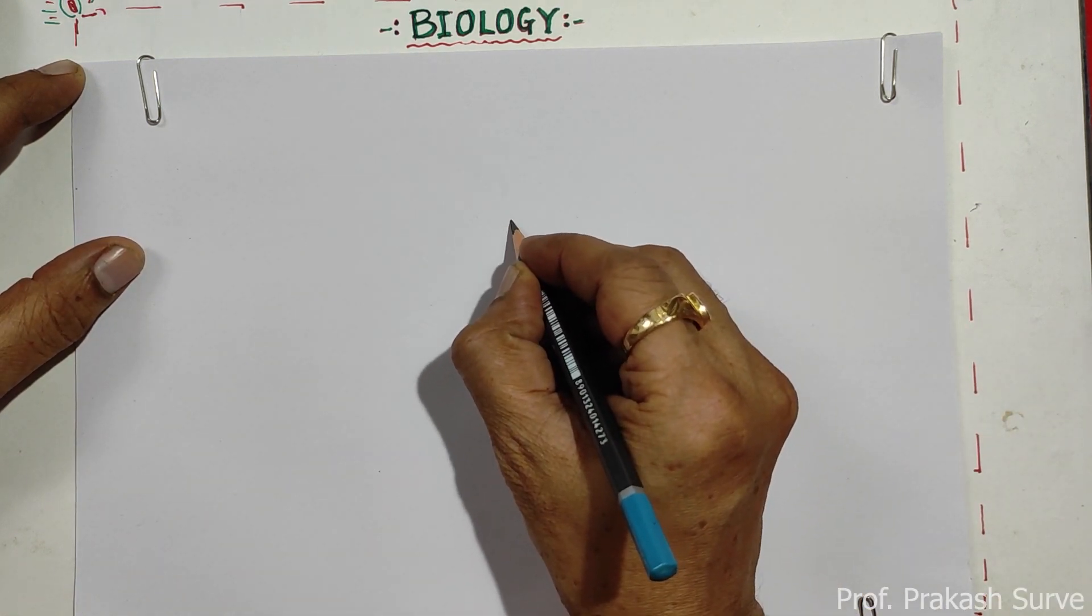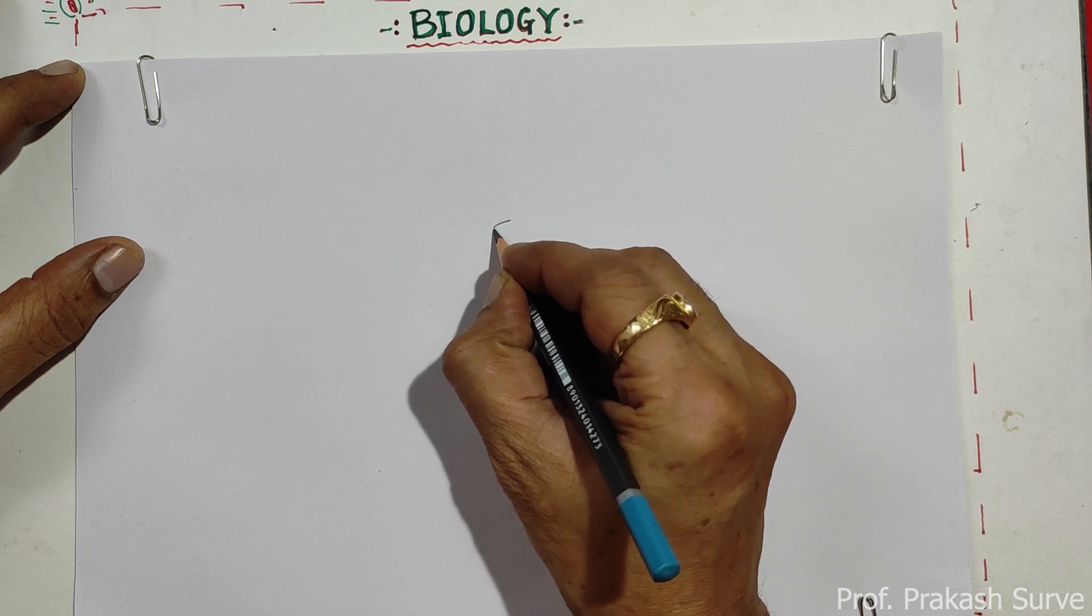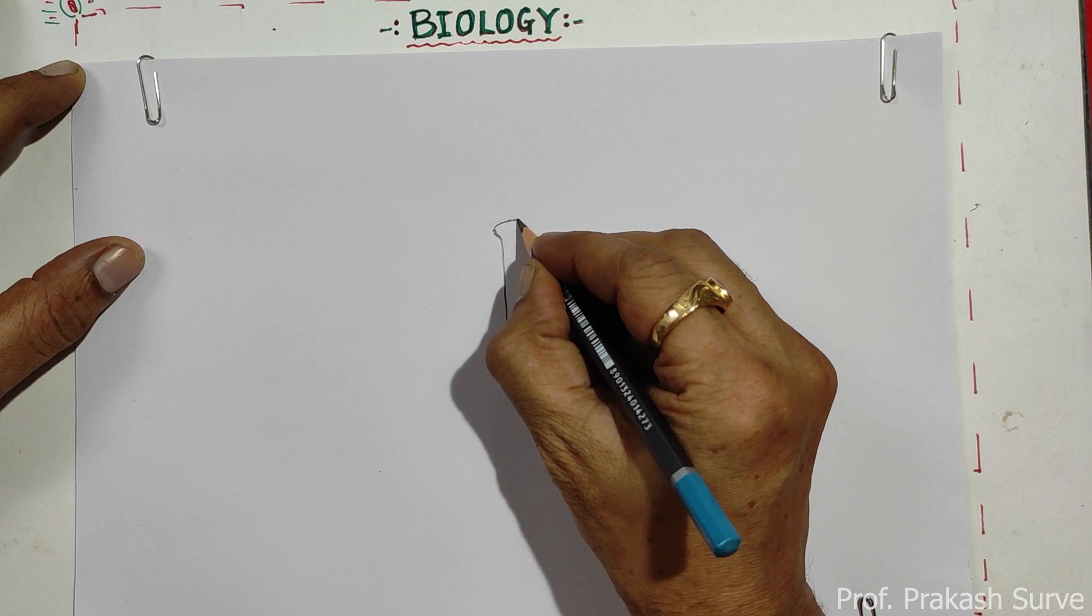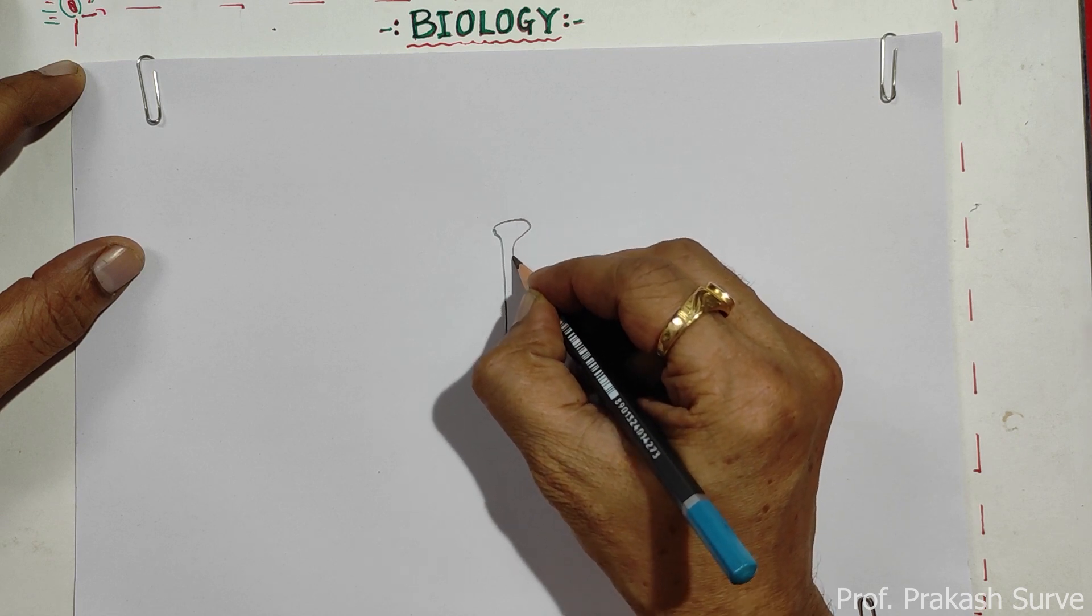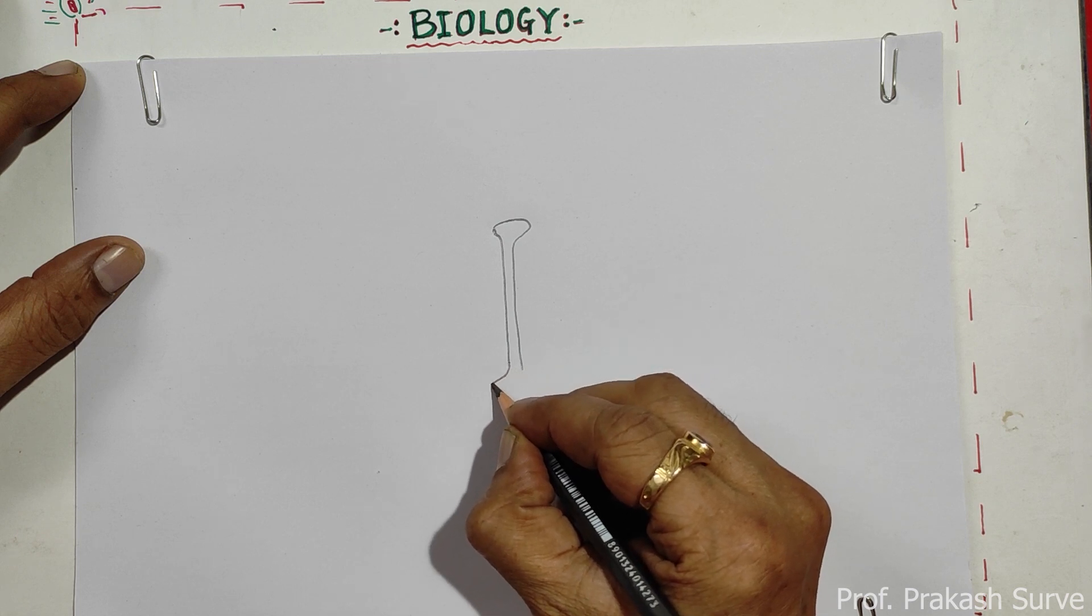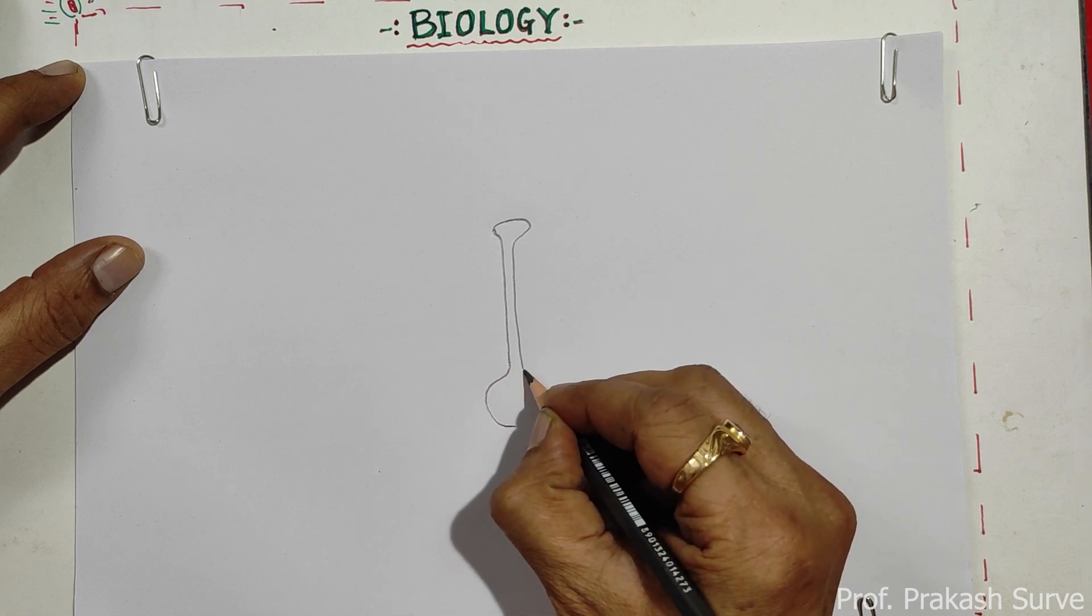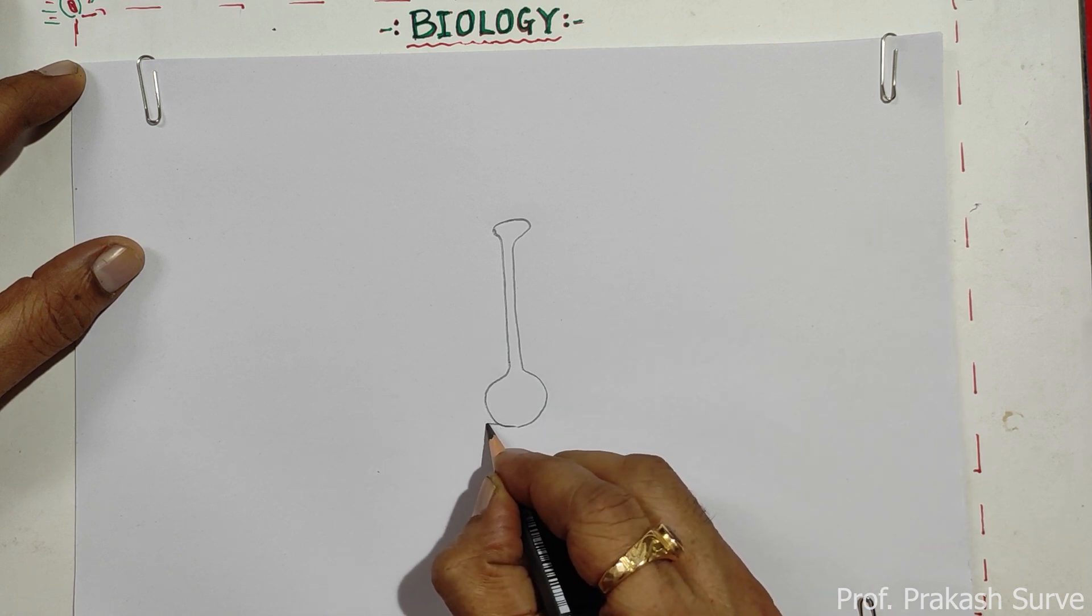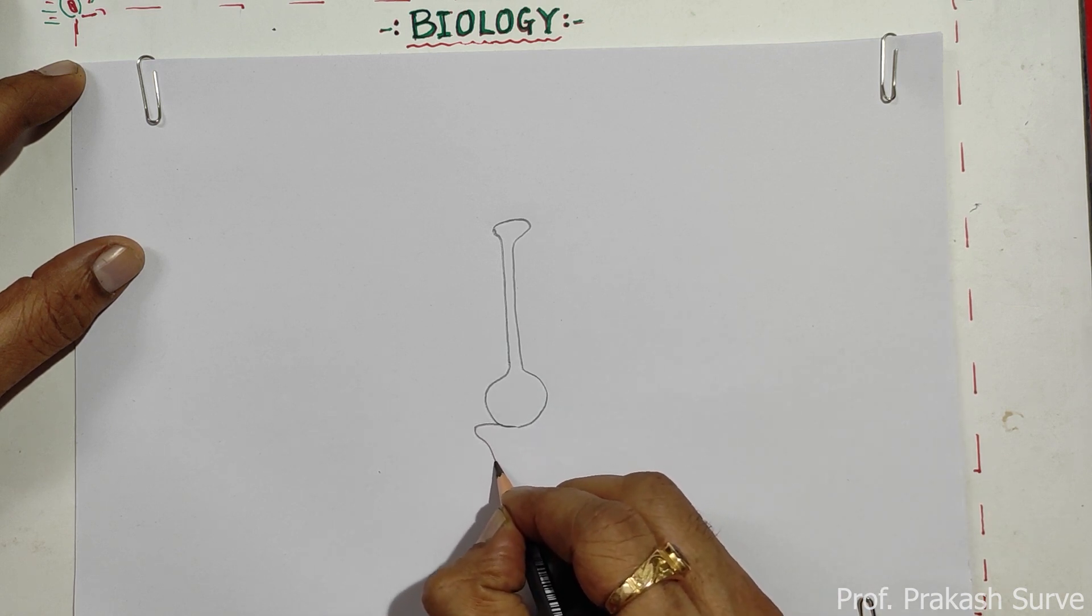First we will start with the stigma, then the style, and then the ovary. Now here we will draw the thalamus.